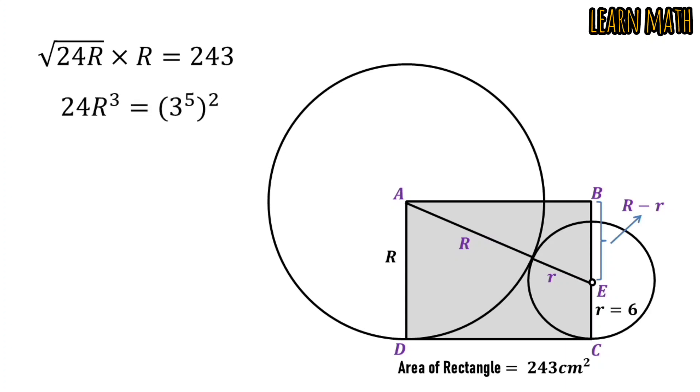Squaring both sides, we will get this. Simplify and we will get 24R³ is equal to 3¹⁰. Dividing by 3, we will get this. Now, dividing both sides by 8 and simplify, we will get this.